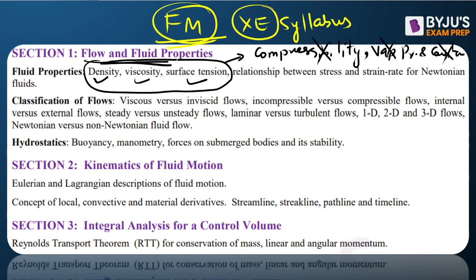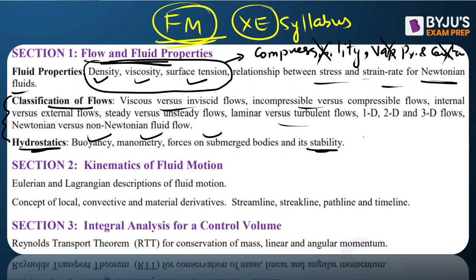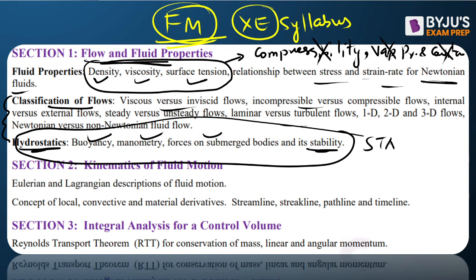Newton's law of viscosity and the stress-strain rate curve are included. Section one also covers classification of flow: viscous, inviscid, incompressible, compressible, internal, external, steady, unsteady, laminar, and turbulent. Hydrostatics — fluid statics, buoyancy, manometry, forces on submerged bodies, and stability — are completely the same as your civil or mechanical syllabus. There is no change in the statics part.